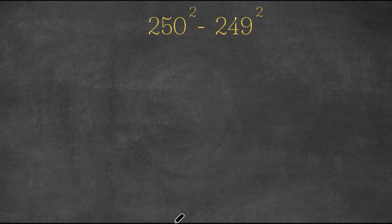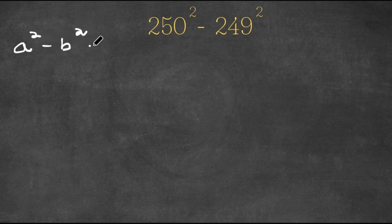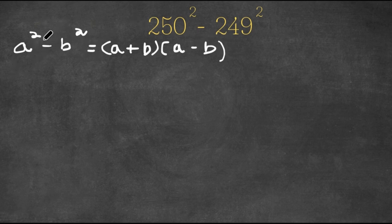Welcome back to Click Academics. In today's video, I'm going to be teaching you guys how to solve this problem without a calculator. So we have 250 squared minus 249 squared. Now in algebra, if we have something in the form a squared minus b squared, this can be written as a plus b times a minus b. So if you have any terms in the form a squared minus b squared, you can write them as a plus b times a minus b.